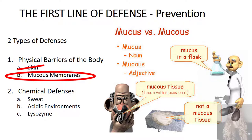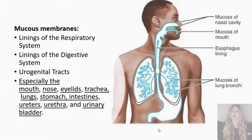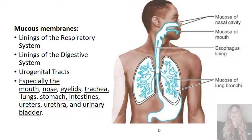We'll talk about the mucus membranes as physical barriers of the body. Our mucus membranes are the linings of the respiratory system, the digestive system, and the urogenital tracts. Special areas of interest for mucus membranes are the mouth, nose, eyelids, trachea, lungs, stomach, intestines, ureter, urethra, and the urinary bladder.